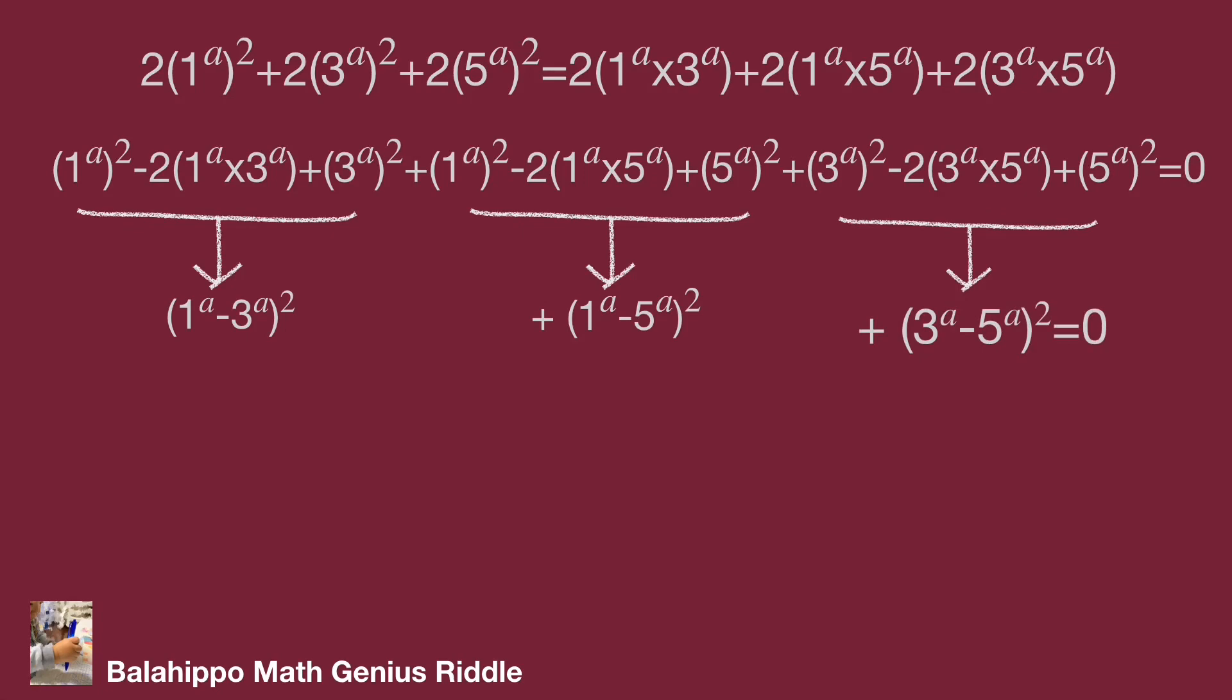So, we get three results as 1 power of a minus 3 power of a equal to 0, 1 power of a minus 5 power of a equal to 0, and 3 power of a minus 5 power of a equal to 0. Then 1 power of a equal to 3 power of a, 1 power of a equal to 5 power of a, 3 power of a equal to 5 power of a.